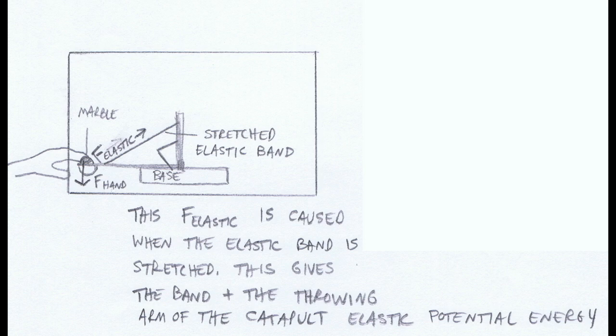Here we see the catapult at launch. So notice the force of my hand in this drawing is pulling the throwing arm down against the force of the elastic band, which is acting on the throwing arm in the direction indicated here, based on the way the band is stretched out.